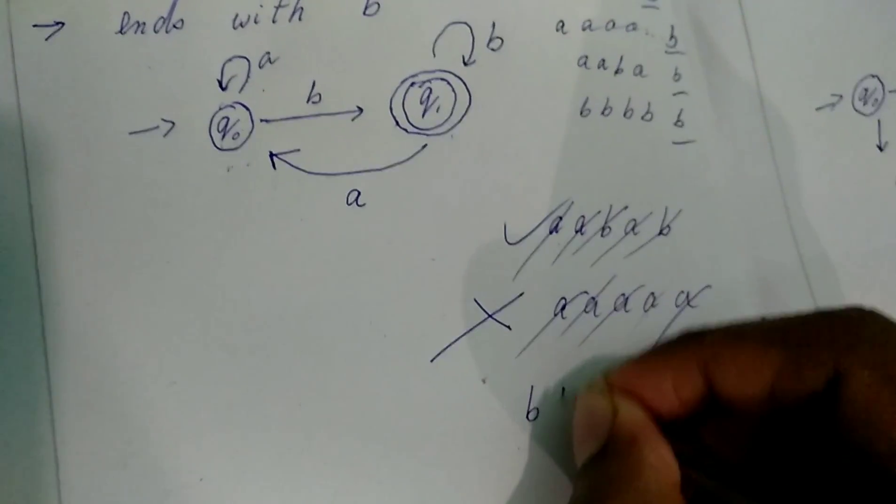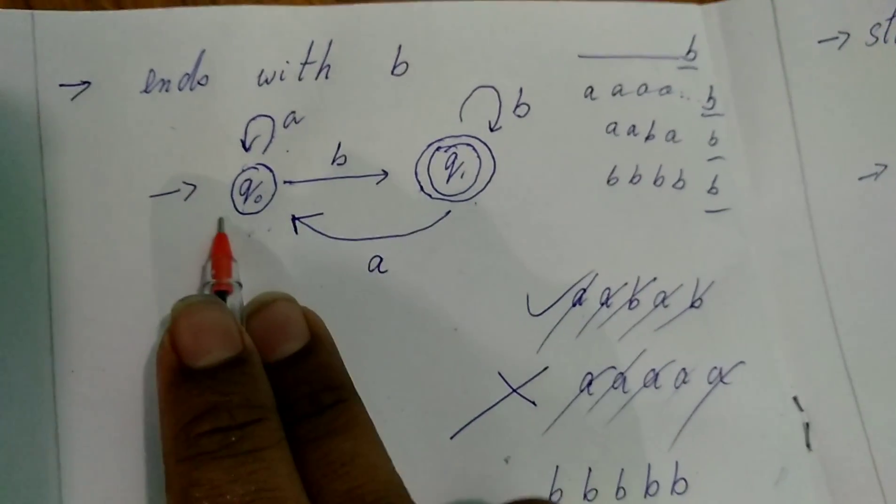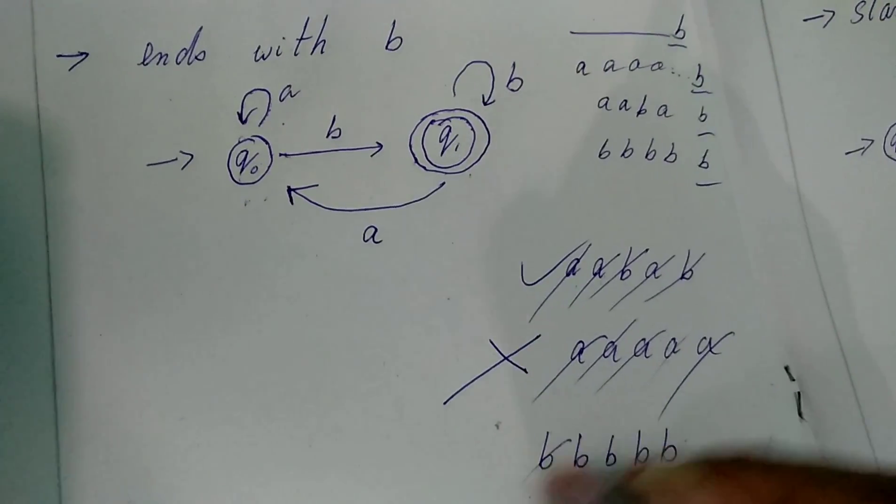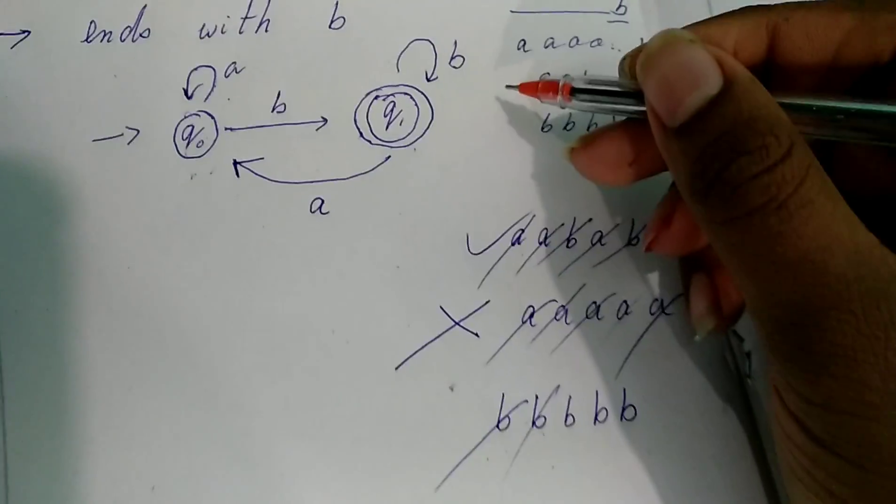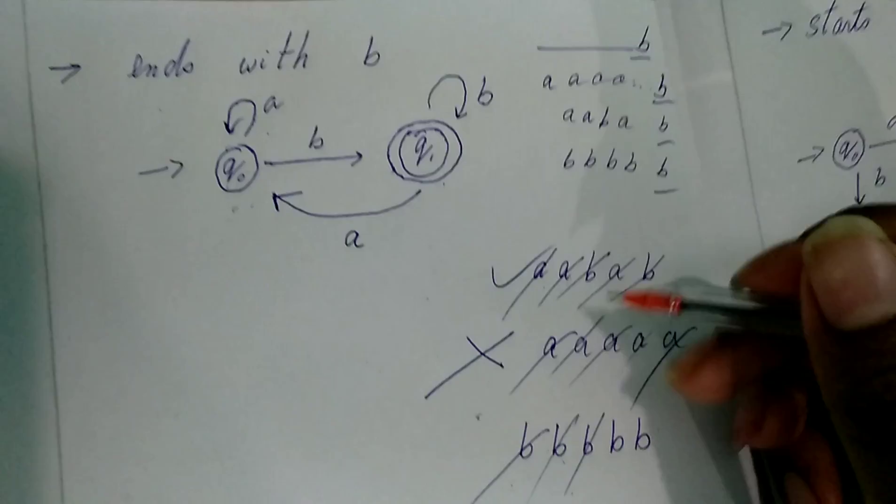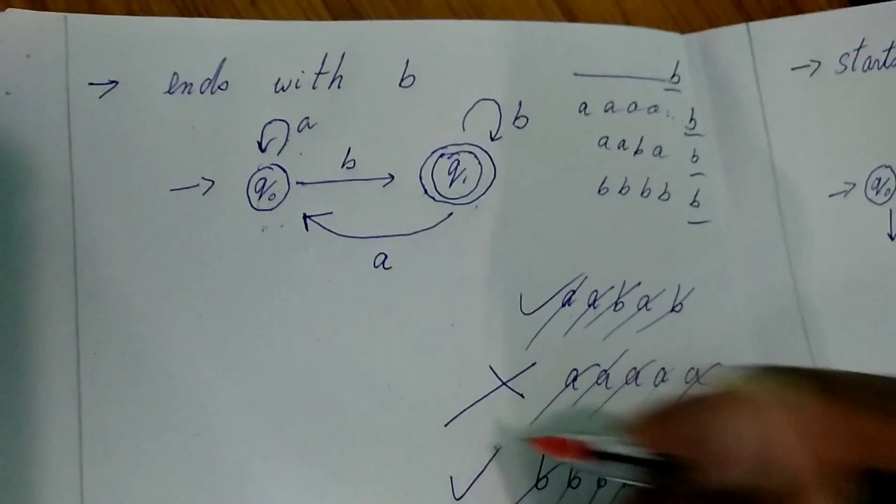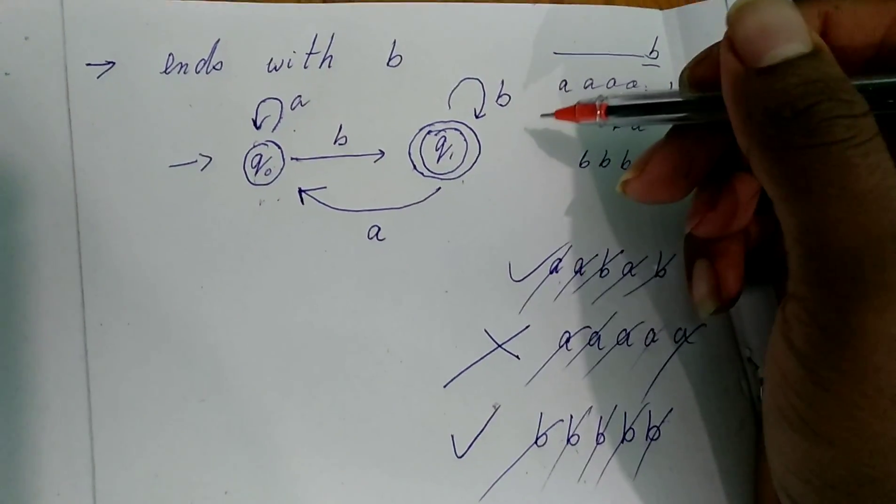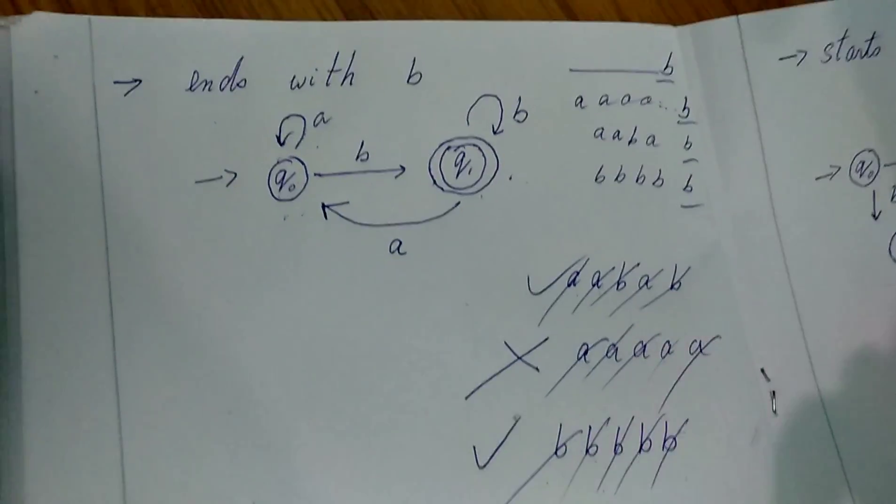Now let's take an example of B, B, B, B, B. So here, we are getting Q0 B, we will go to Q1. B, self-loop, remain in the same state. B, again B, self-state, again B, same state, again B, same state. The string has been accepted. Because it's in the final state, there is no need to go anywhere. If the string is present in the final state itself, it means the string has been accepted.